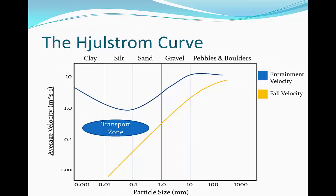Next up we have the deposition zone, where all the particles are deposited and left to one side in the river. If the velocity is below the fall velocity, the particles become stationary and are left at one point in the river where there isn't enough energy to move them along. So they're not being transported and they're not being eroded — they're just deposited and they're not going to be touched.